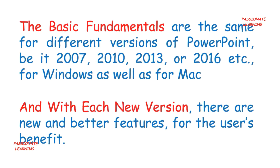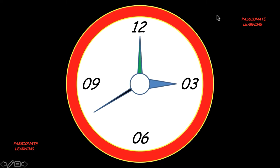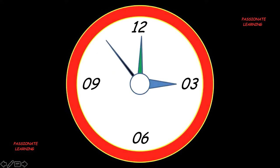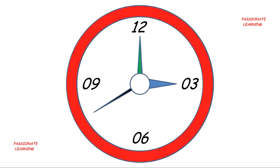Let us first see some examples of what we are going to learn today. We are going to learn how we can create this beautiful analog clock and then how we can animate it. The seconds hand is moving and after some time the minute hand as well as the hour hand will also start moving. We can also change the background to make it a little bit more different.